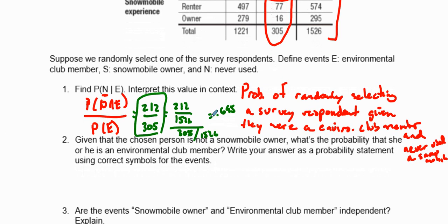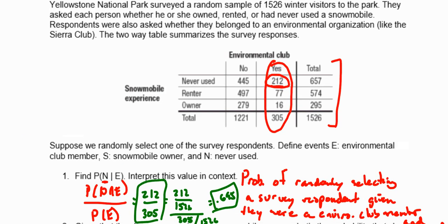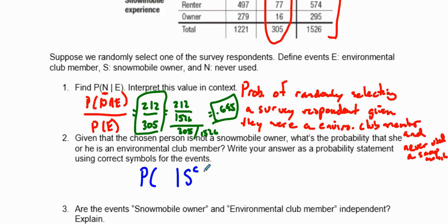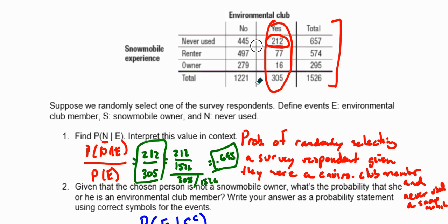Given that the chosen person is not a snowmobile owner, what's the probability that she or he is an environmental club member? Write your answer as a probability statement. We're going to take the probability of E given S complement, not a snowmobile owner, and they are an environmental club member.